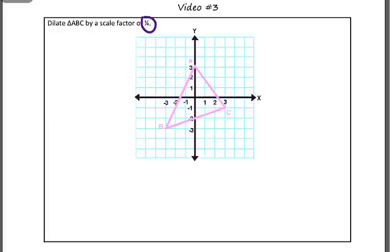I need to start by getting my ordered pairs. So, A is the ordered pair 0, 3, B is the ordered pair negative 3, negative 3, and C is the ordered pair 3, negative 1. To apply a dilation, all we need to do is take each of our ordered pairs, and both the x value and the y value, and multiply them by our scale factor.